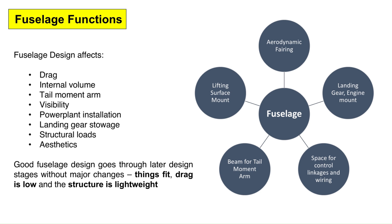The fuselage has many different functions, such as being an aerodynamic fairing for protection, a mount for lifting surfaces, engines, and landing gear, a beam that provides the necessary moment arm for the tail surfaces, and a space to accommodate pushrods, cables, and wiring.